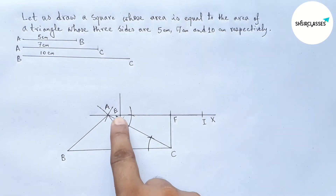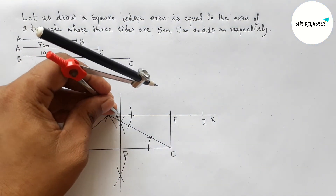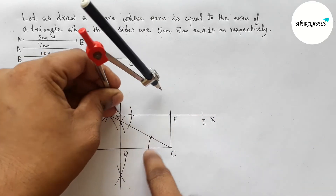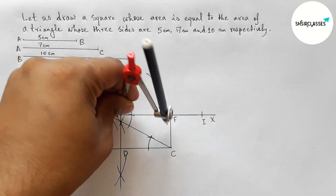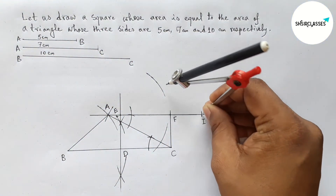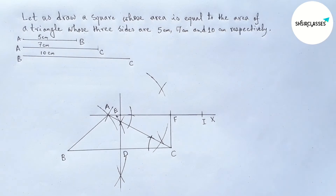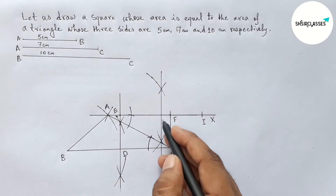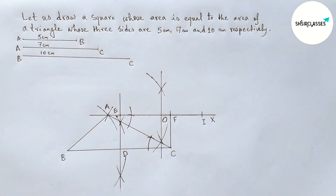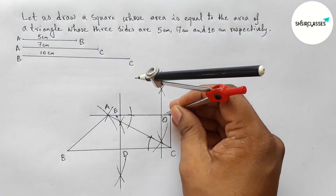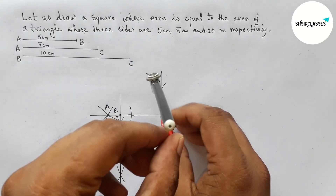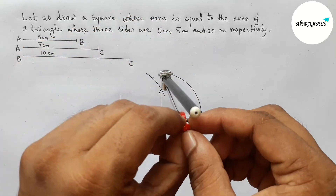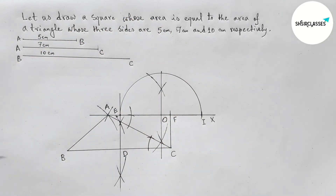Next, bisecting the line EI. Putting the compass on point E, taking greater than half of EI and drawing an arc. Now putting the compass on point I and cutting here, joining these arcs which bisect EI at a point, taking that point as O. Now taking center O and drawing a semicircle from point I to point E.